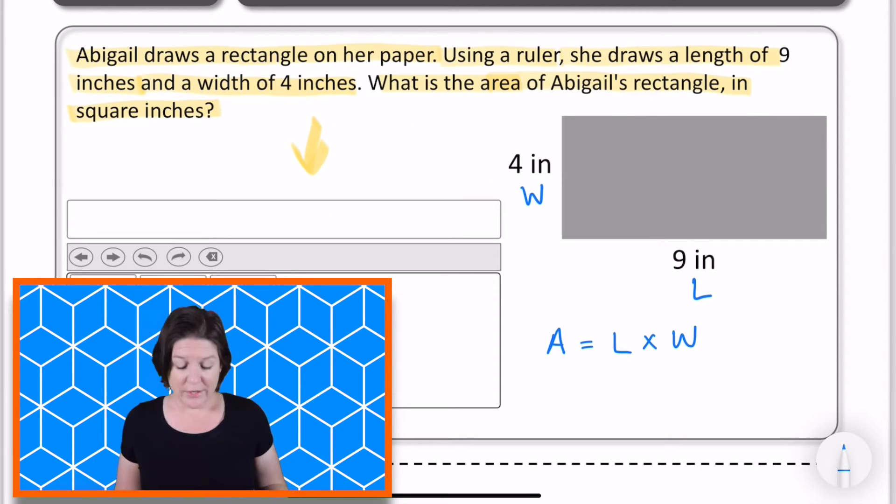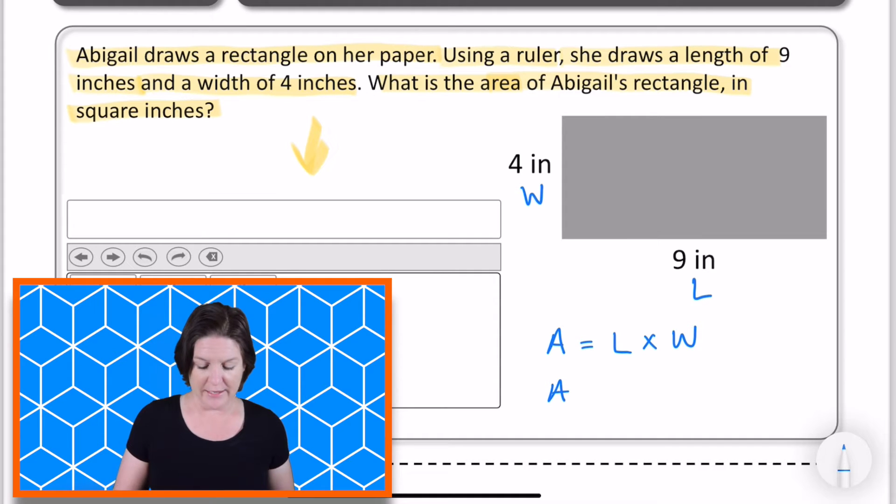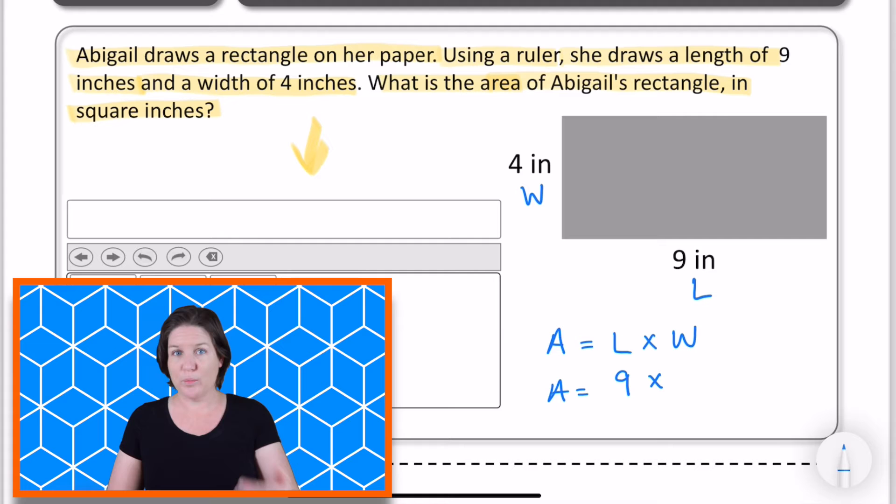So let's go ahead and plug in what we know. We're trying to find the area, so we'll keep the variable A. We know the length is how many inches? Nine. So we'll plug that in for the length times a width. Do we know what the width is?